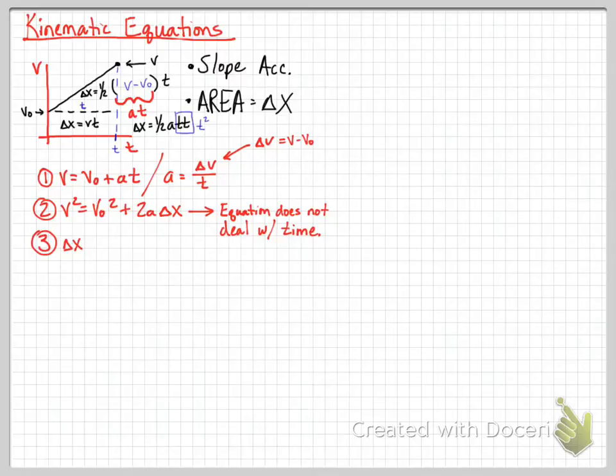So taking those two equations we have there in the black at the top, where x equals vt and x equals one half a t squared, we rewrite them by adding them both together, where we have v not t plus one half a t squared. And this is where our third equation comes from.